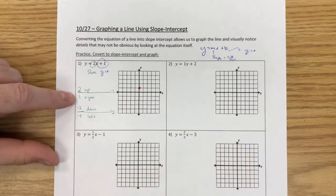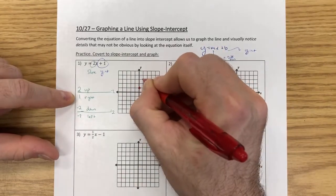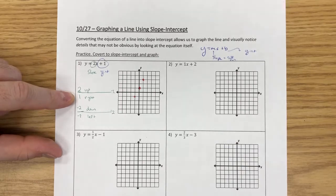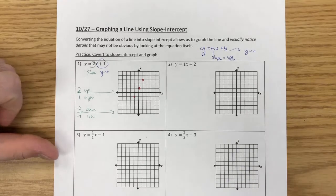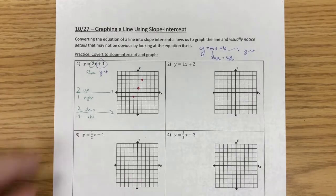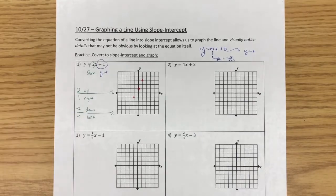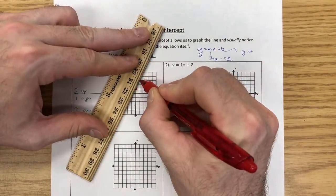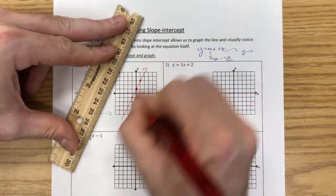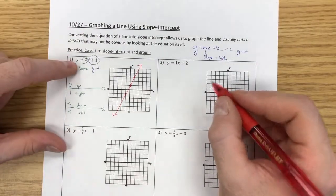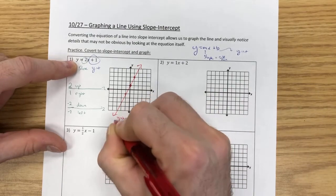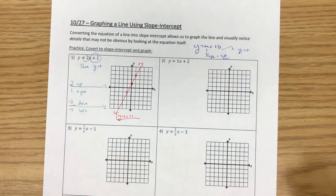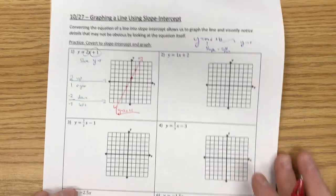If I go up two and right one, or down two and back one, I end up getting a straight line. It doesn't matter if we use up-right or down-left — we get points along the exact same line. I like to label my line y equals 2x plus 1. It's not required when there's only one line on the graph, but once we're graphing multiple lines it helps clarify which is which.